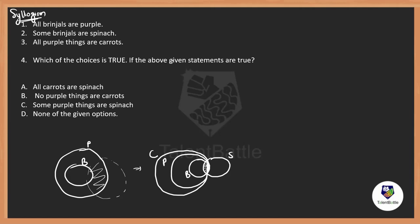Now checking which choice is true given the above statements. Option A — all carrots are spinach: from the diagram only some carrots are spinach, so option A is false. Option B — no purple things are carrots: but all purple things are carrots per the statement, so this is completely opposite and false. Option C — some purple things are spinach: yes, from the Venn diagram some of the purple area overlaps with spinach. So option C is definitely correct.